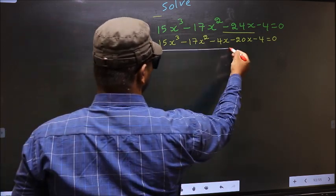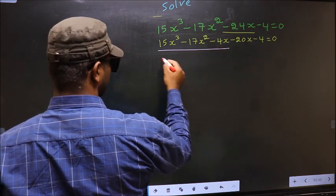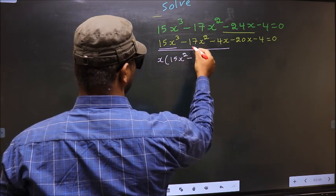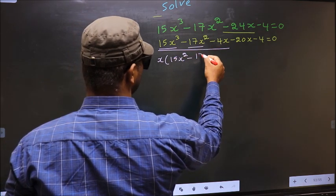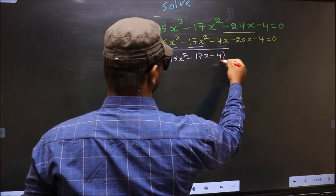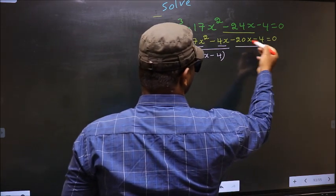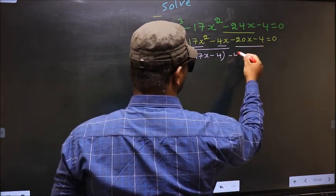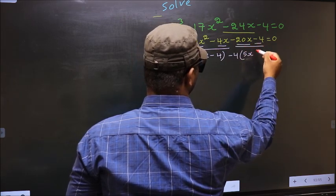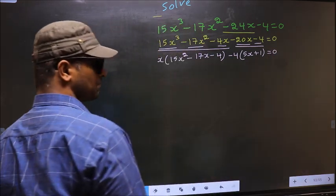Now, from these first 3 terms, what can be taken out common is x. So here you get 15x² minus 17x minus 4. From the last 2 terms, what can be taken out common is minus 4, so here you get 5x plus 1 equal to 0.